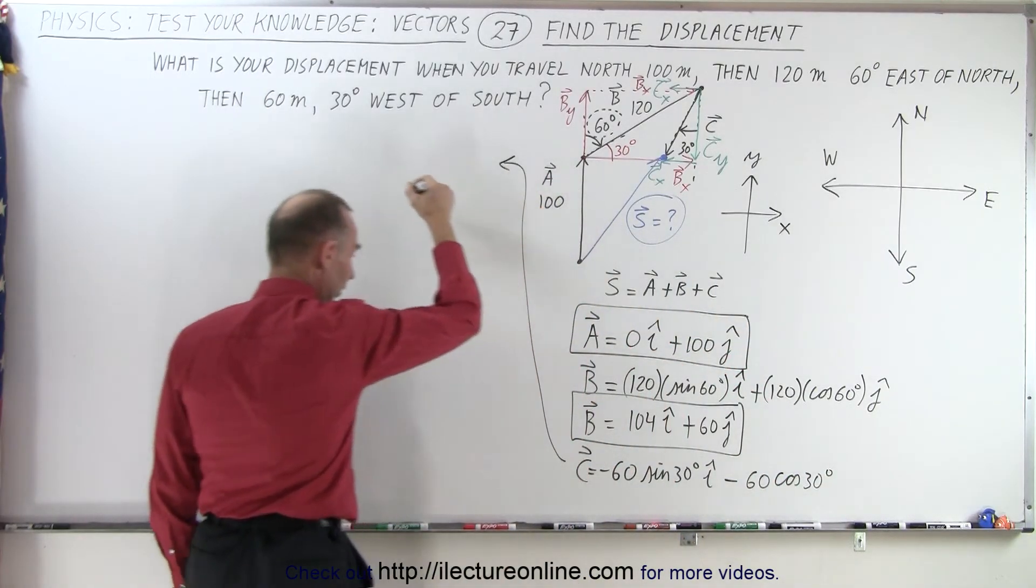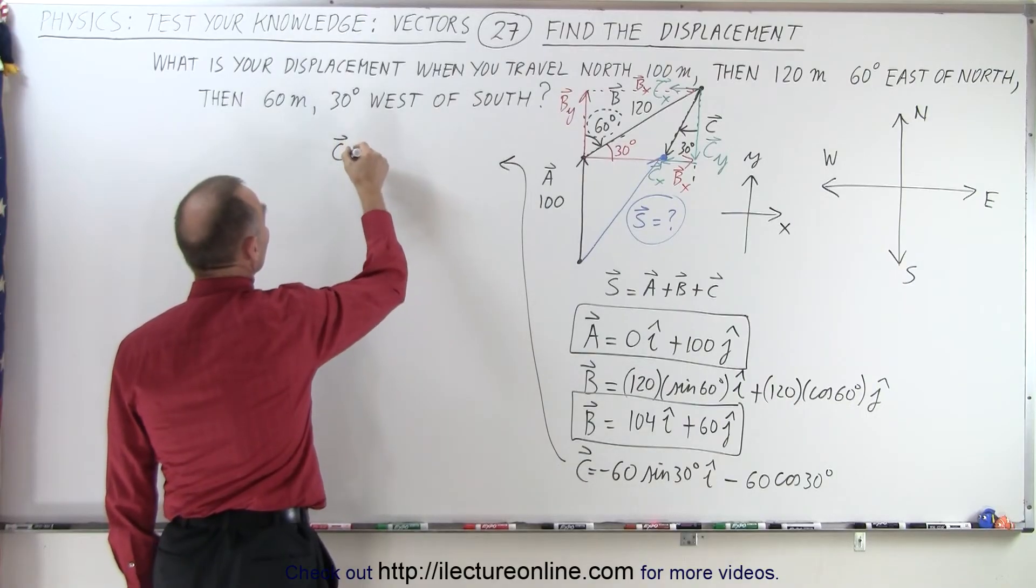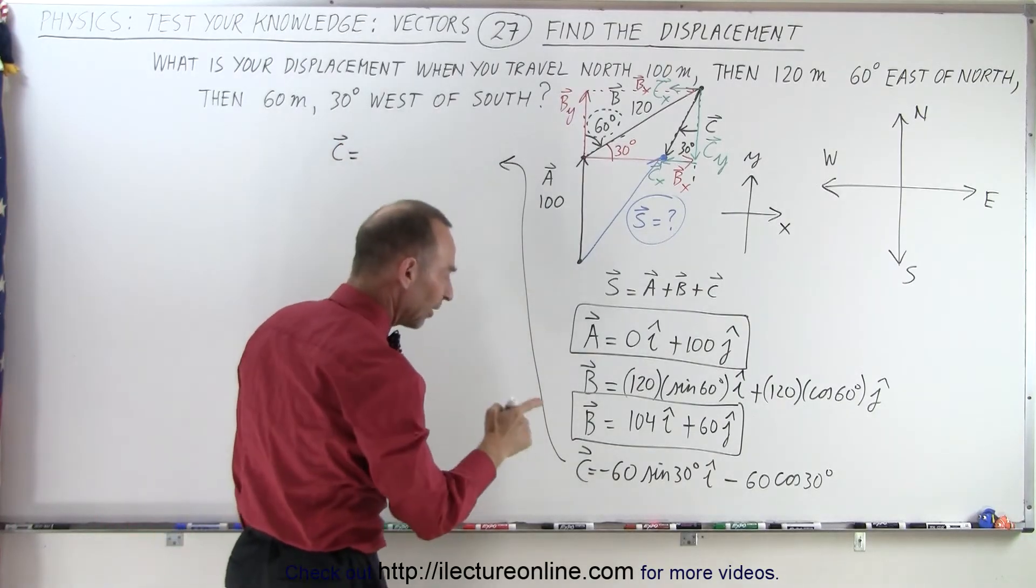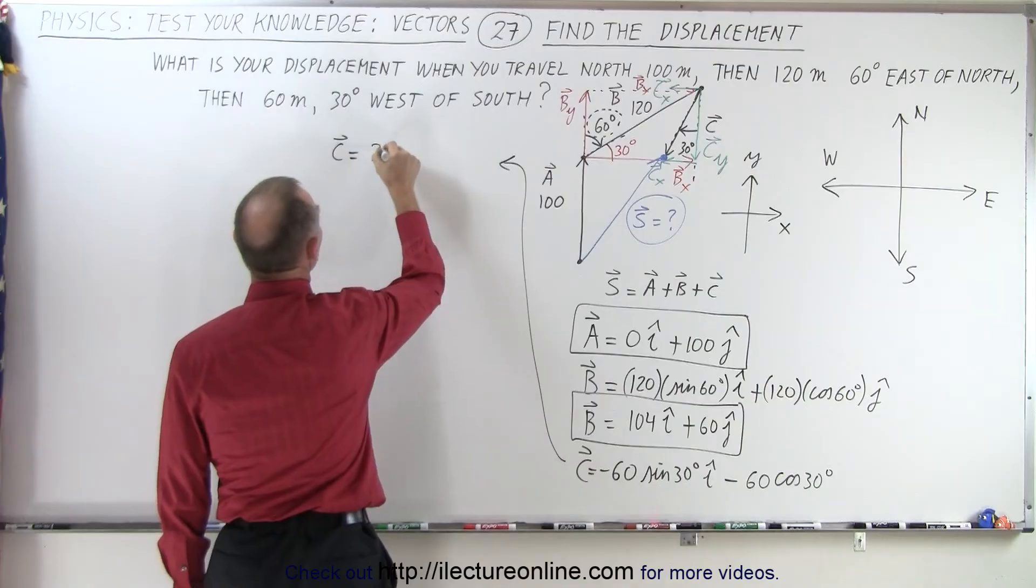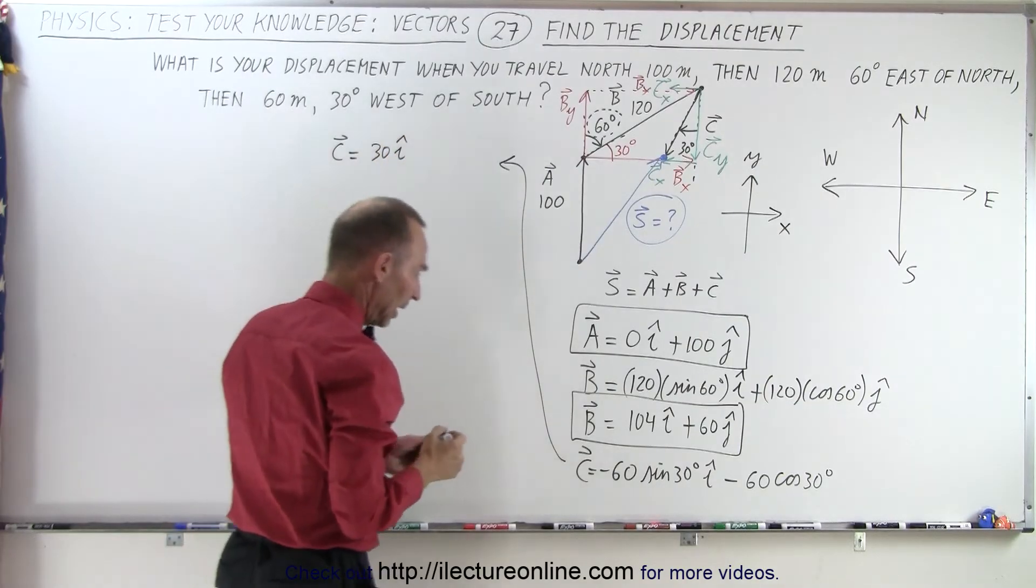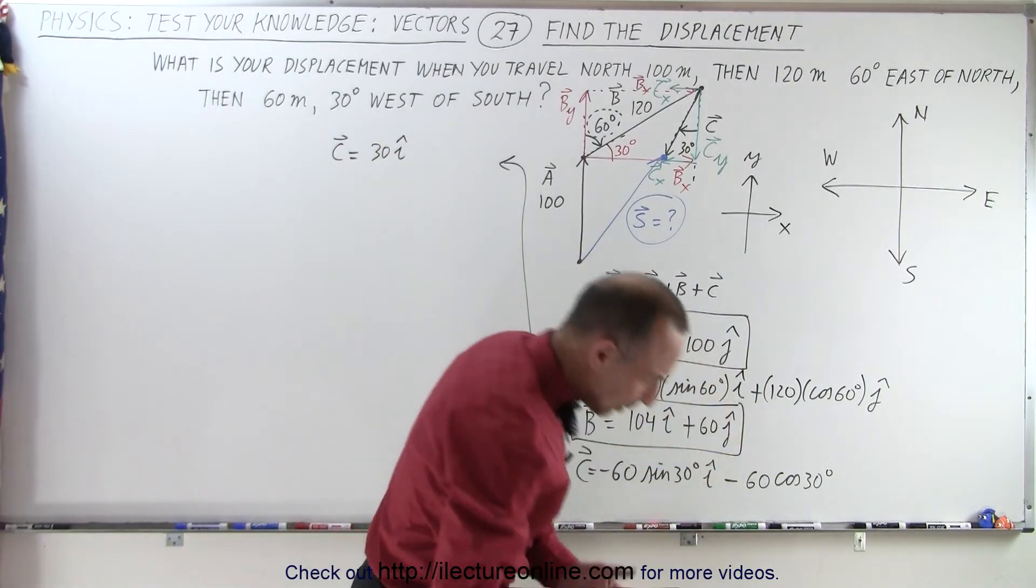Let's go over here and finish that up. So that means that C is equal to the X component, sine of 30 is one-half. That would be 30 in the I direction, and 30, take the cosine,